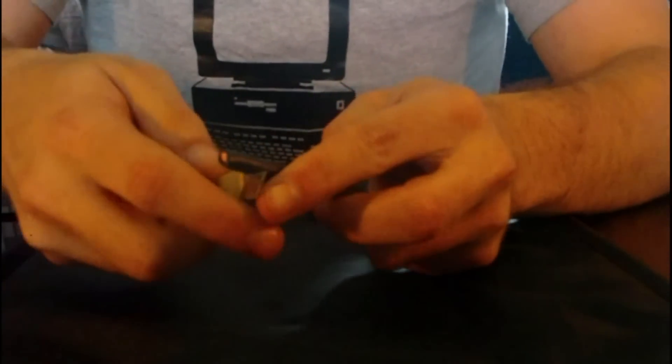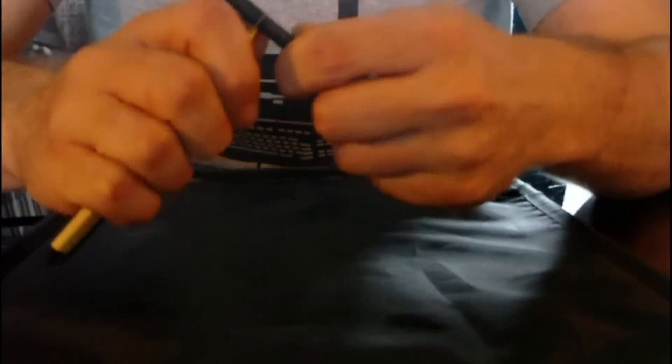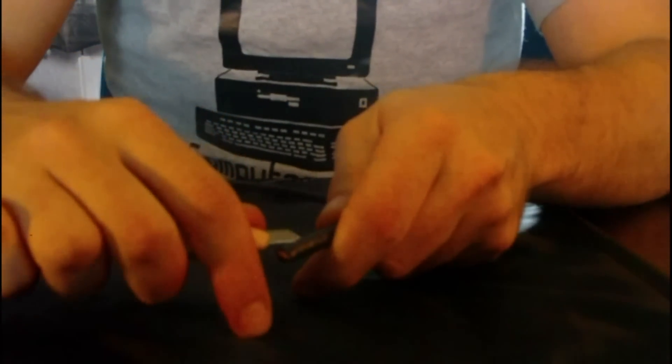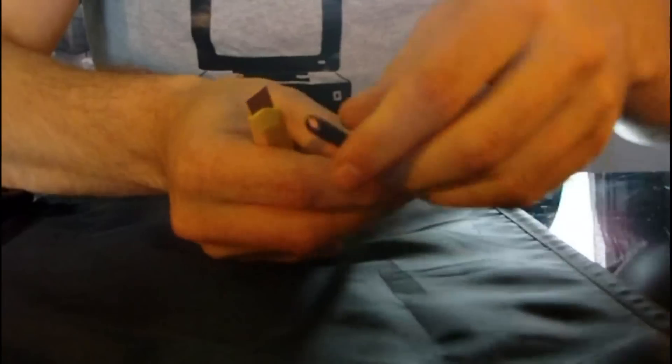First of all, remove the outer sheath by running a blade around the outside about 1cm down and then run it up to the end of the cable. Your sheath should now slip off quite easily.